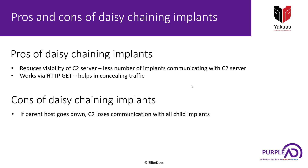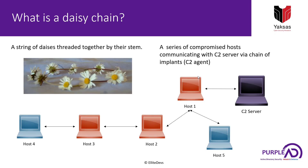Now let's look at the pros and cons of using daisy chain implants. The first obvious pro is that only one implant is talking to our C2 server, which reduces the visibility of our C2 server. With more implants communicating to the C2 server, there's a higher probability that traffic gets detected and the C2 server gets blocked. Another pro is that via PoshC2, daisy chains work over HTTP GET requests, which helps conceal the traffic.